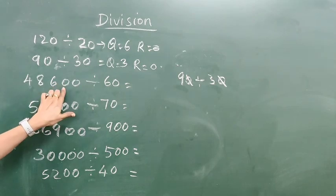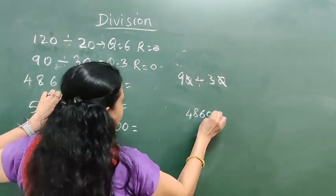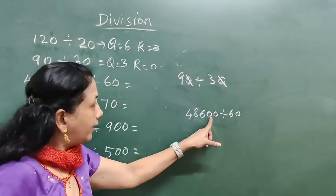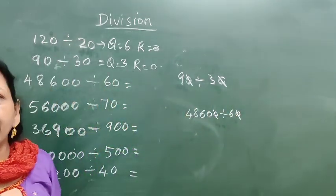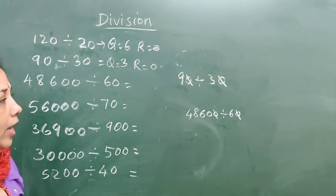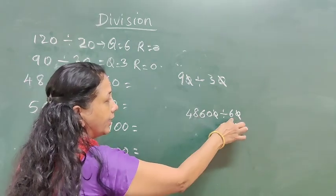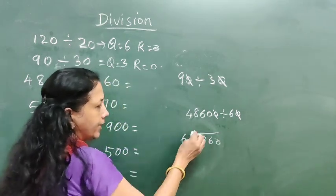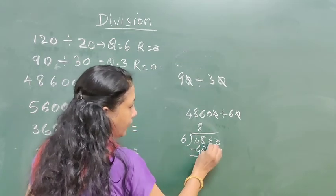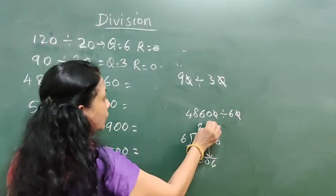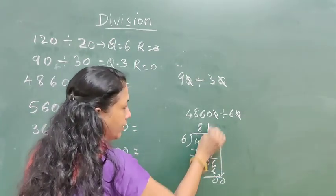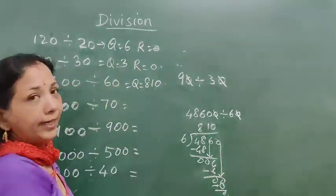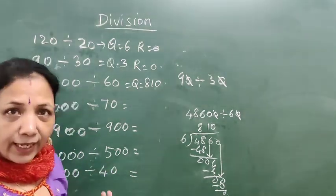Now 48,600 divided by 60. How many 0s are there? One 0 in 60 and one 0 in 48,600 — remove one 0 from both. Now 4,860 divided by 6. We divide: 6 eights are 48, then 6 ones are 6, then 6 zeros are 0. So the quotient is 810, remainder is 0. Is it clear?